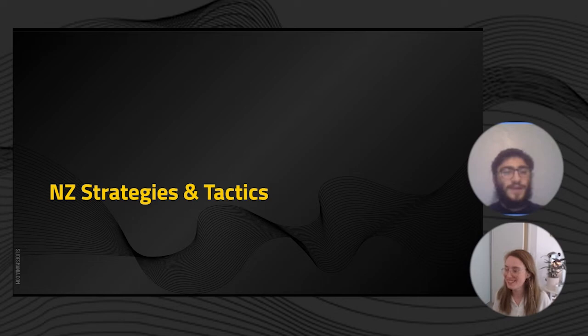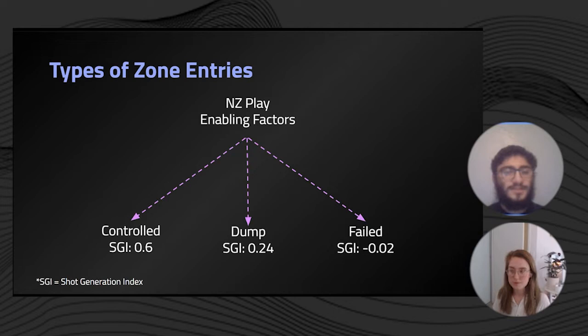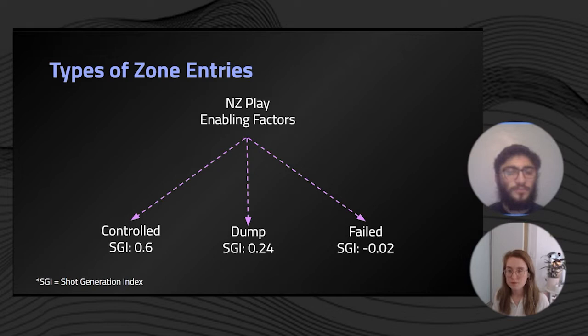In terms of neutral zone strategies and tactics, neutral zone play — or for the sake of this presentation, the enabling factors — can lead to one of three outcomes in terms of zone entries. Controlled entries, which encompass carried and played entries, have a shot generation index of about 0.6. Dump entries have a shot generation index of 0.24, and the third option is fail entries, which have a shot generation index of minus 0.02. These shot generation indices are derived from previous research with PWHPA data, and the key point is that controlled entries are more than twice as valuable as dump entries.